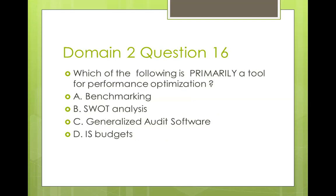Question sixteen: which of the following is primarily a tool for performance optimization? A) Benchmarking, B) SWOT analysis, C) generalized audit software, D) highest budgets. Benchmarking means measuring where you are compared to the leader in the industry. SWOT analysis is used for strategy planning — strengths, weaknesses, opportunities, and threats. Generalized audit software is used in audits. Highest budgets is also used in strategy. So the best answer is A — benchmarking. What is the industry leader doing, and how can we close the gap?